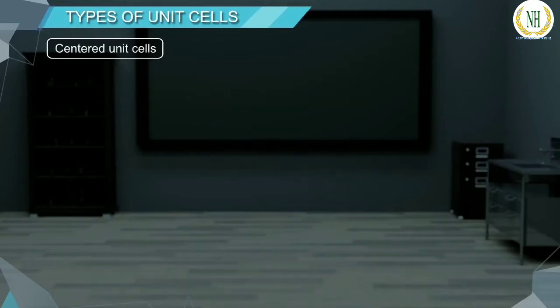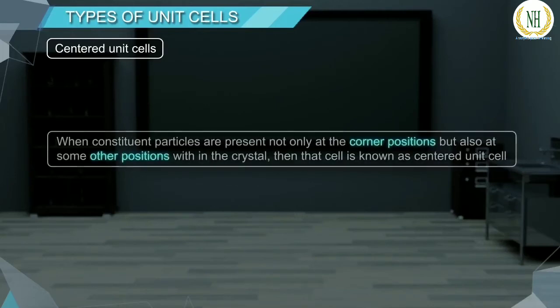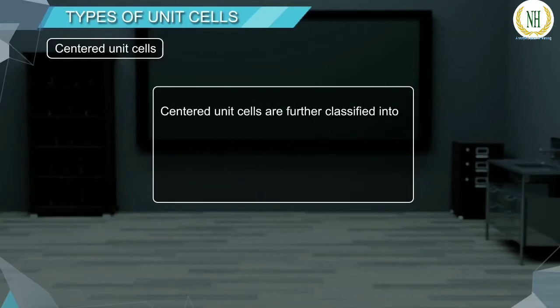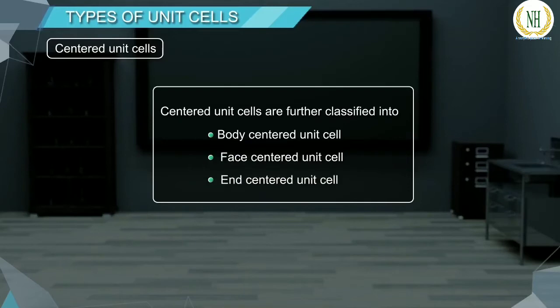Centered Unit Cells: When constituent particles are present not only at the corner positions but also at some other positions within the crystal, then the cell is known as a Centered Unit Cell. Centered Unit Cells are further classified into Body Centered Unit Cell, Face Centered Unit Cell, and End Centered Unit Cell.